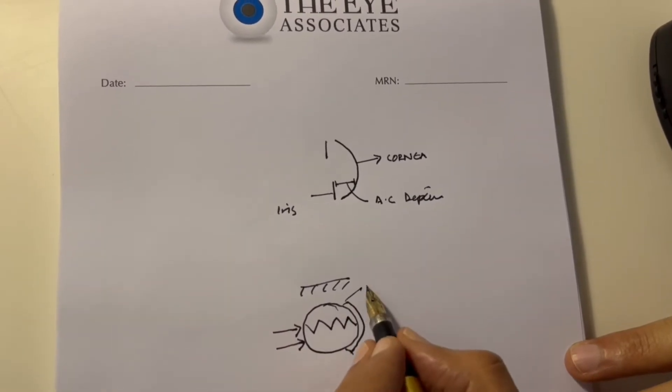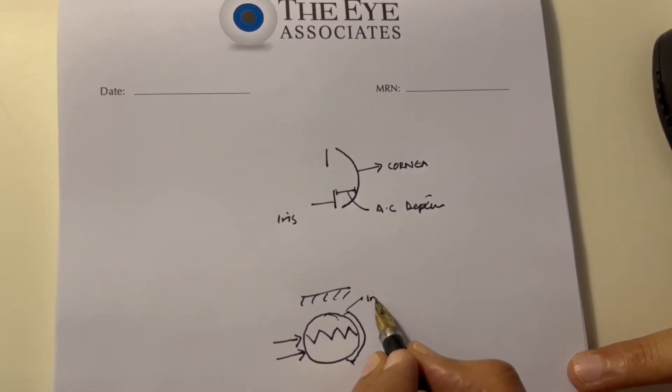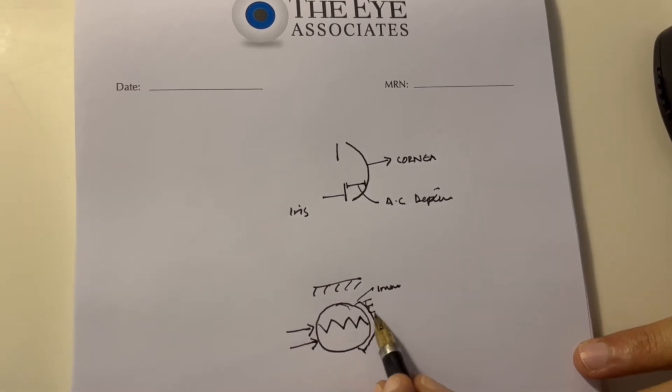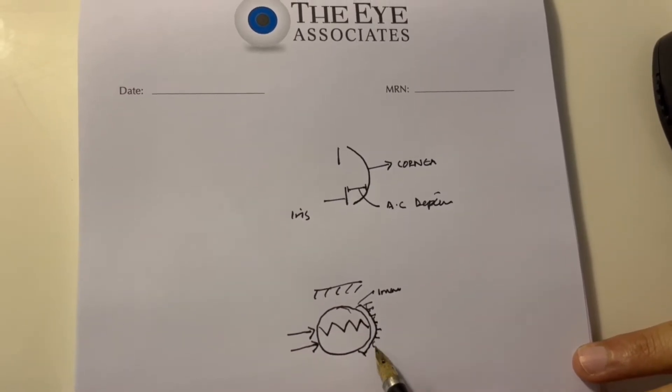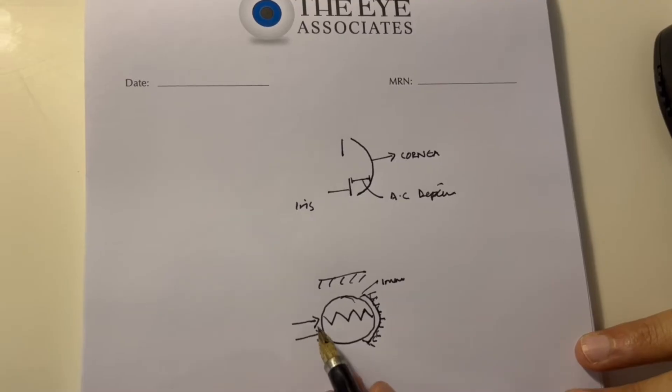If the anterior chamber depth is normal, it forms a crescent of about one millimeter, which is where the ciliary bodies start.